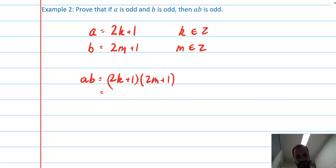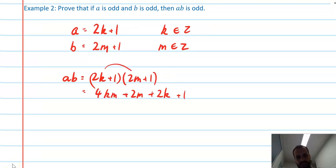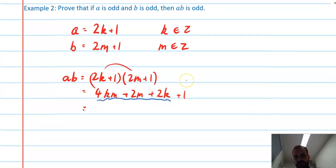Expand that using the FOIL method, you don't need to watch me do that. Okay, and what do we have? We've got all of this junk here, and then a + 1 on the end, and we're trying to prove that this whole thing is odd.